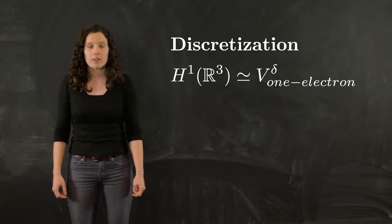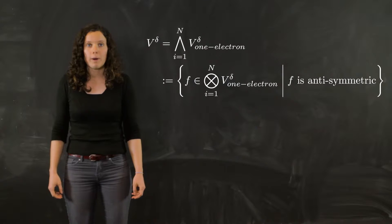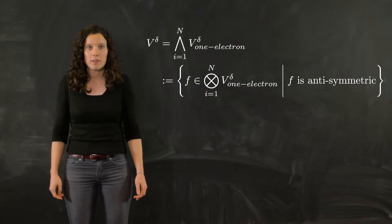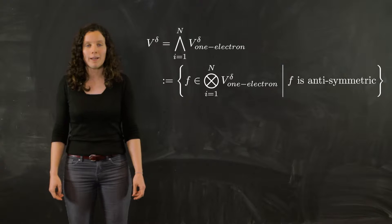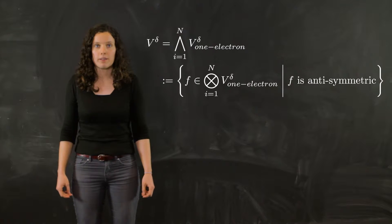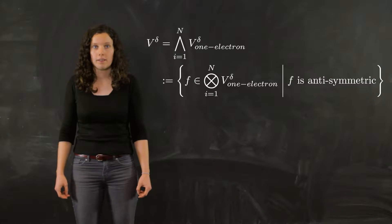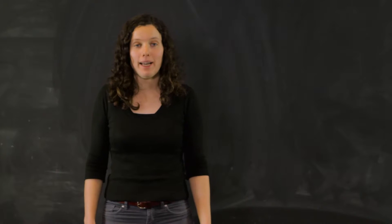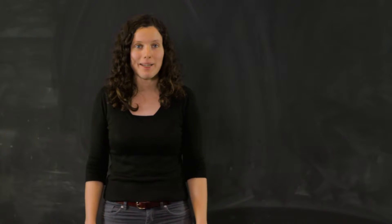We call this subspace of H1 V_1_electron_delta. It contains functions of three coordinates corresponding to the position of an electron. The discretized space V_delta of all the wave functions is the antisymmetric tensor product space of V_1_electron_delta. This corresponds to antisymmetric functions belonging to the tensor product of V_1_electron_delta. This space is a finite dimensional space as well.